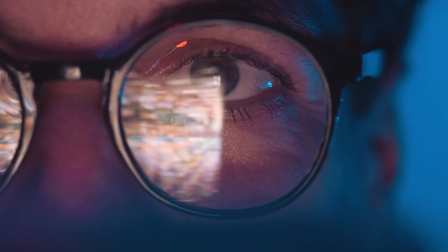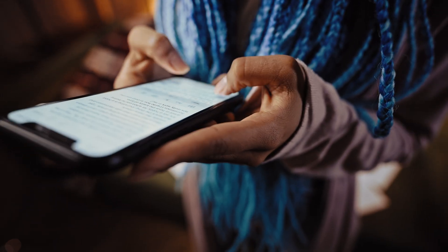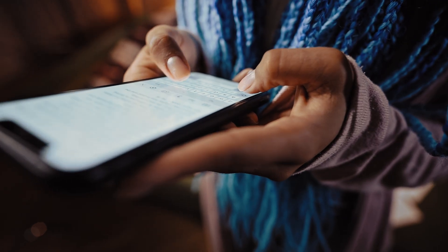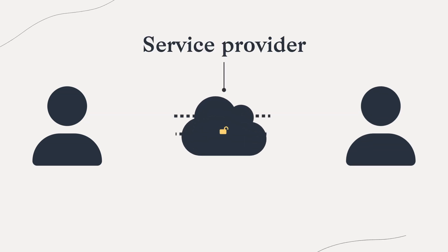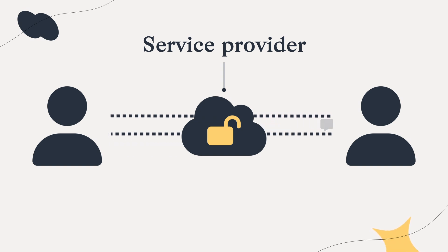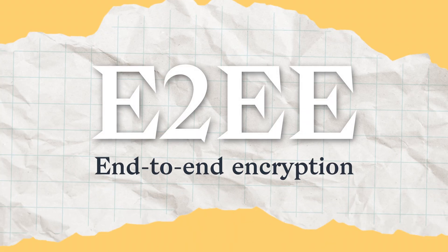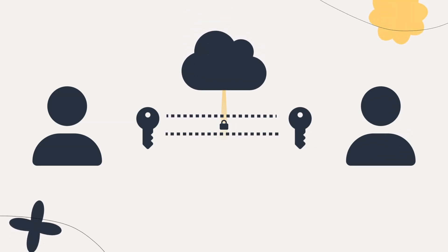We live in a world where almost everything is connected to the internet. Our private messages, emails, and social interactions are typically stored on a server somewhere. The obvious problem is that the service provider or a hacker who has compromised the server can access your communications whenever and however they want, without you ever knowing. Thankfully, end-to-end encryption can alleviate this issue by encrypting communications between you and your desired recipients before they are even sent to the server.